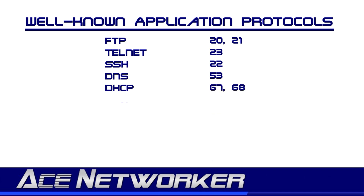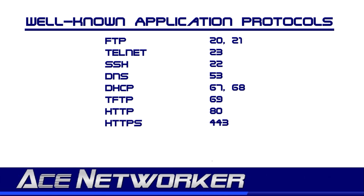DHCP, Dynamic Host Configuration Protocol, uses UDP ports 67 and 68. TFTP, Trivial File Transfer Protocol, uses UDP port 69. HTTP, Hypertext Transfer Protocol, which we talked about earlier, uses port 80. HTTPS, which is HTTP using secure certificates, uses port 443. These are the well-known port numbers you'll see quite often in networking.